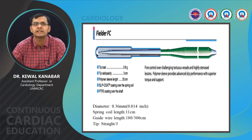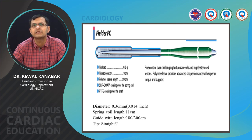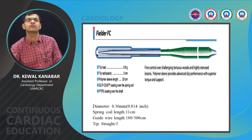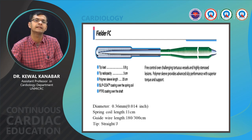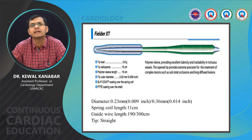The Fielder FC wire has a polymer coat, tip load of 0.8 gram, 3 cm radiopaque tip, and gives fine control in challenging tortuous anatomies and highly stenosed lesions. The polymer sleeve provides advanced slip performance with superior torque and support. It is a 0.014 wire, 180 cm length, comes in straight tape and J-tip.